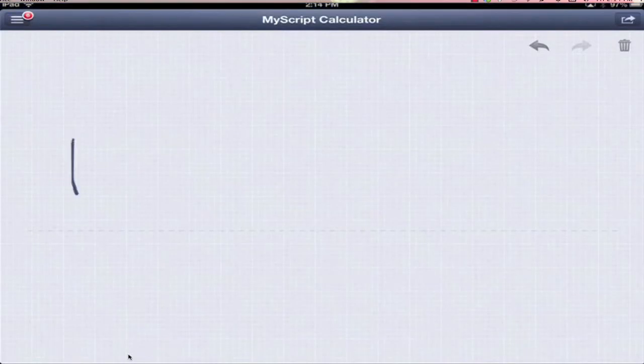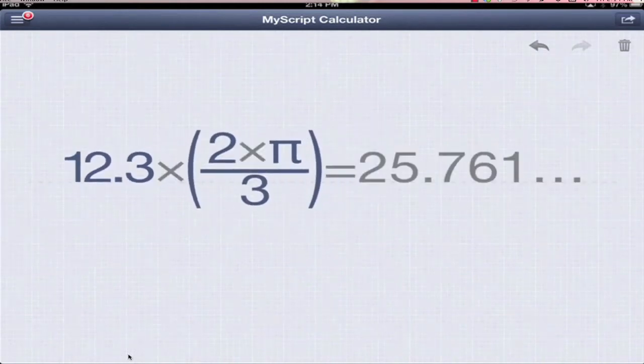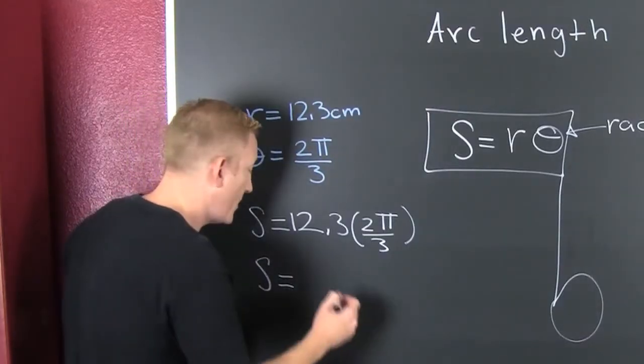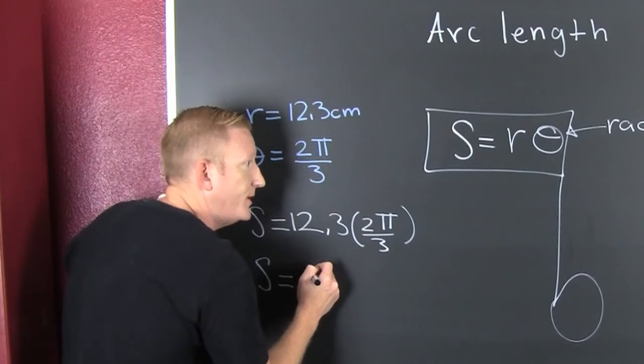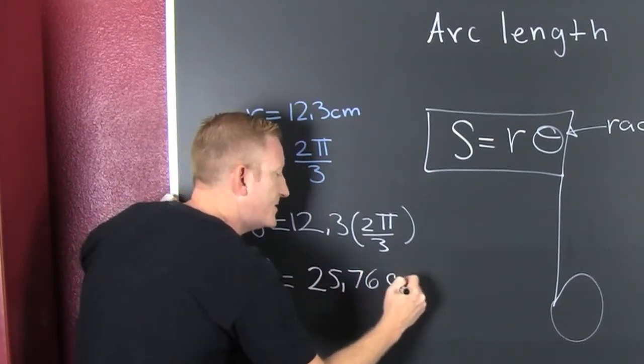So 12.3 times 2 pi over 3. That turns out to be 25.76-ish. And when we do, we find that our arc length is going to be 25.76 centimeters.